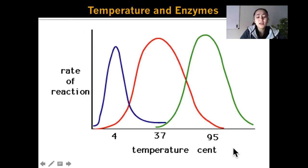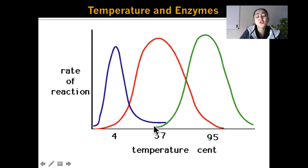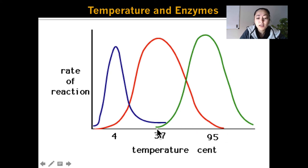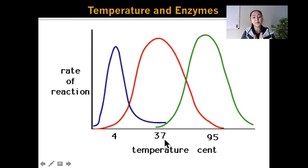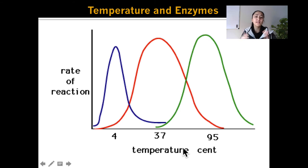This graph is showing the curves for three different enzymes, and notice that each enzyme has a different optimum temperature where it works the best. This blue enzyme has an optimum temperature of around four degrees Celsius, the red one 37 degrees Celsius, and the green one 95 degrees Celsius. This green curve could represent an enzyme found in bacteria that live in a hot spring — those bacteria must have enzymes that can function best in temperatures close to boiling. Our body temperature is 37 degrees Celsius, so the enzymes within our body work best at 37 degrees Celsius, shown by the red line.